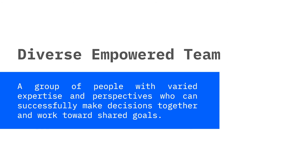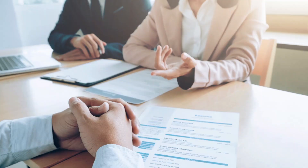Empowered teams have the agency to make everyday operational decisions on their own. They are equipped with the expertise and the authority to deliver outcomes. You can stay aligned as a team by making time on a regular basis to share what you're doing with the whole team — it's the only way to make sure you're all doing the right work and heading in the same direction together.